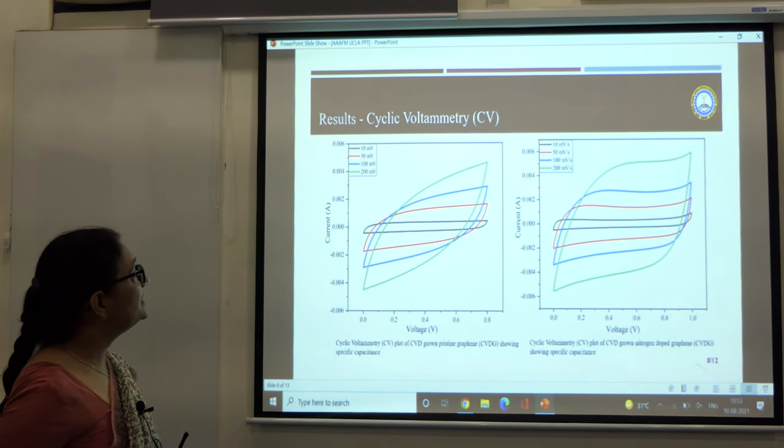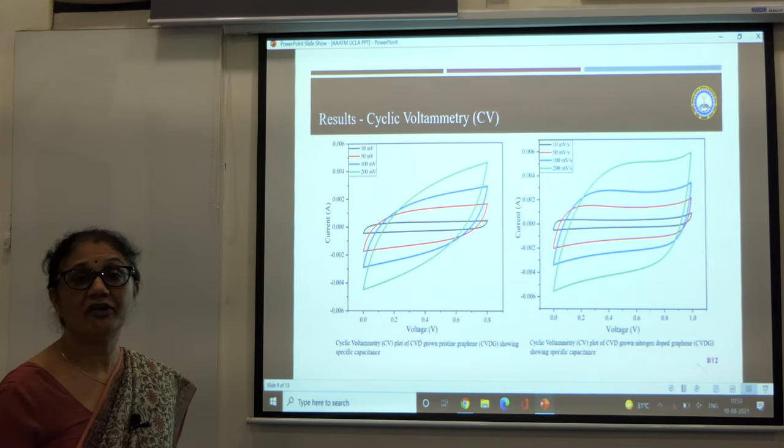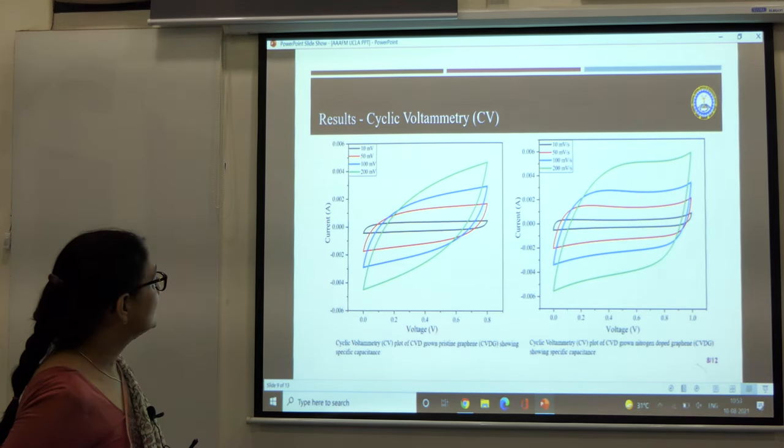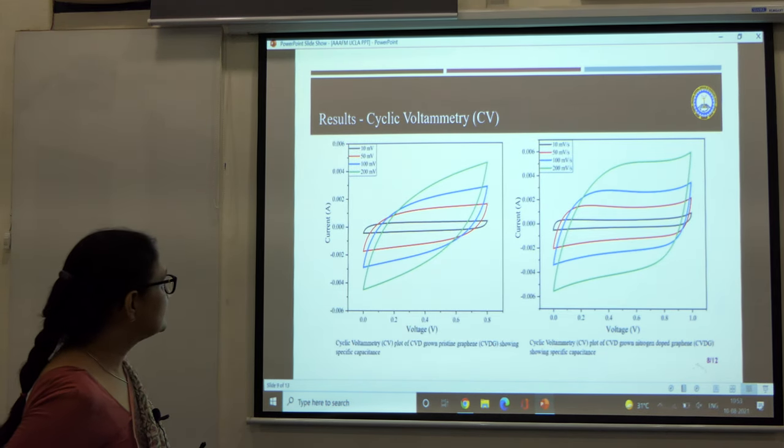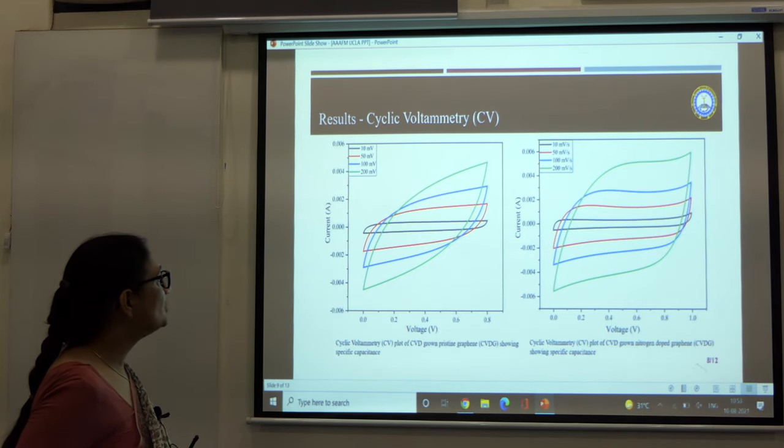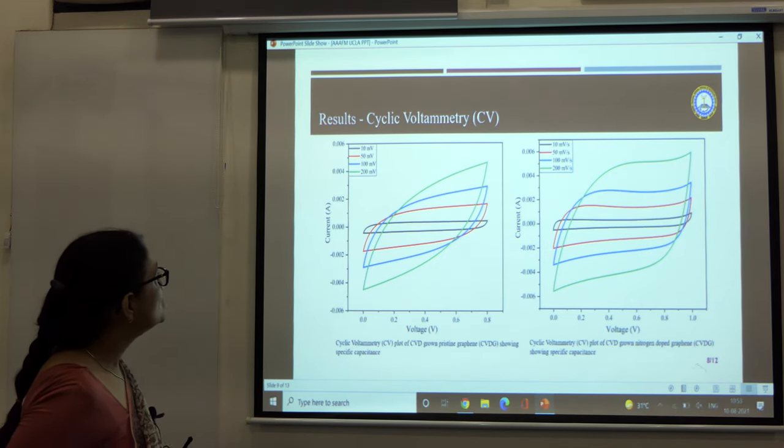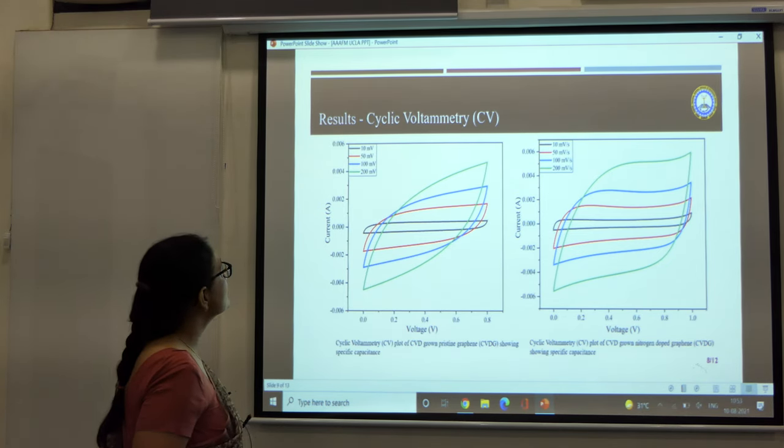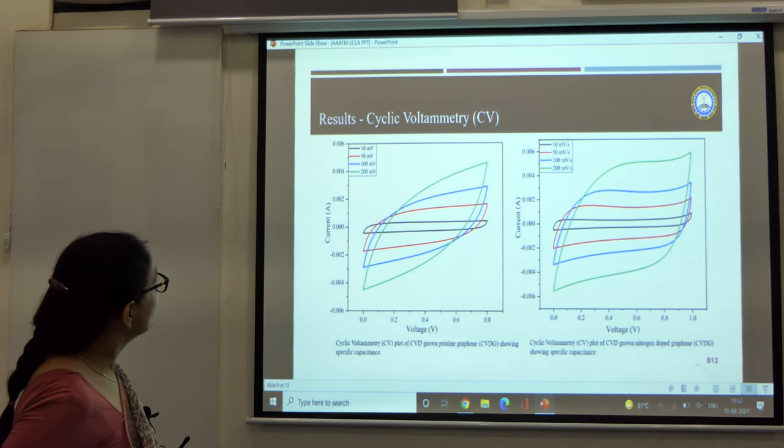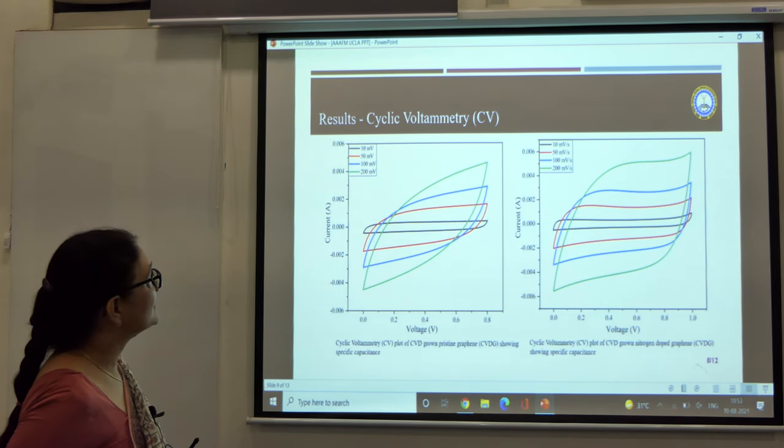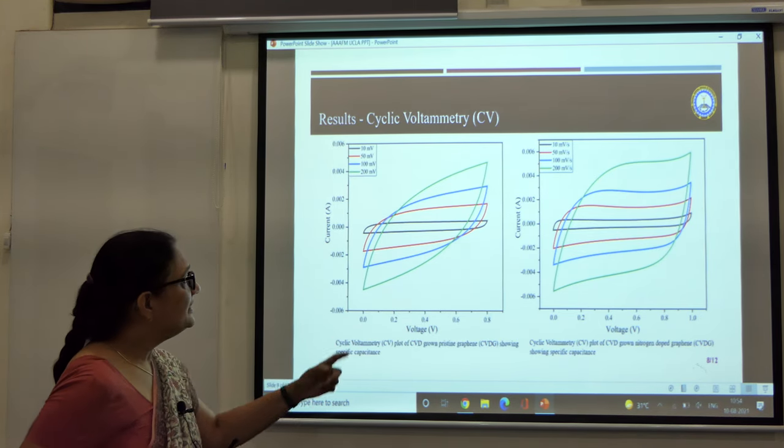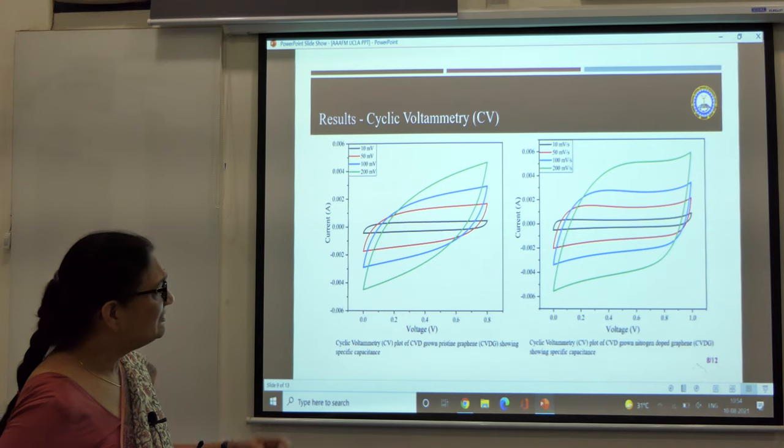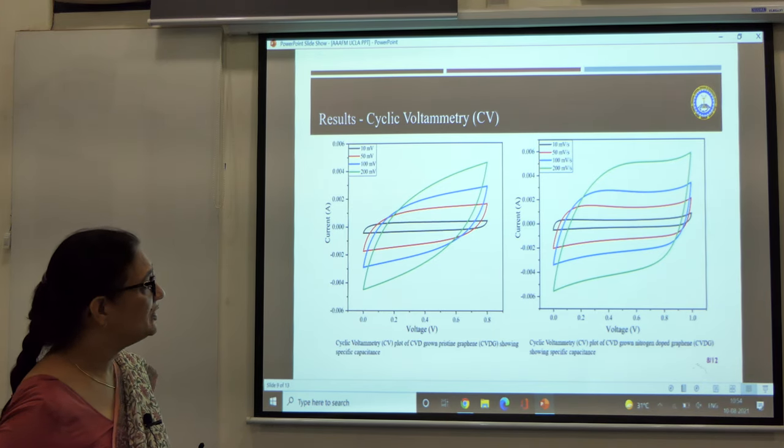These are the results of the cyclic voltammetry. These are the cyclic voltammetry plots of the CVD grown pristine graphene showing the specific capacitance at different scan rates from 10 millivolt to 200 millivolt per second. There's a typo here, this should be millivolt per second.